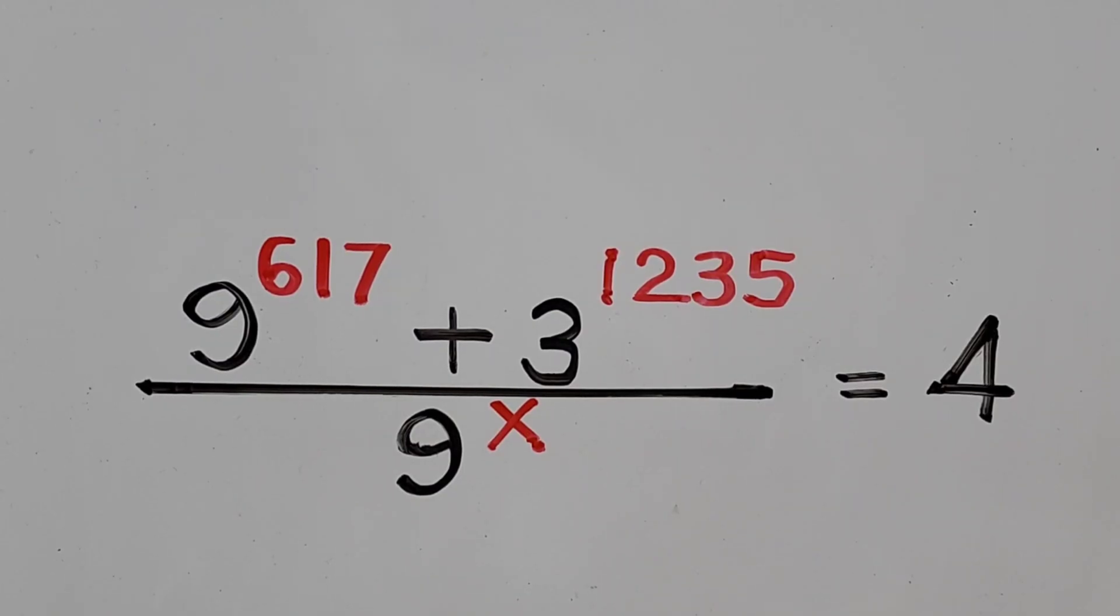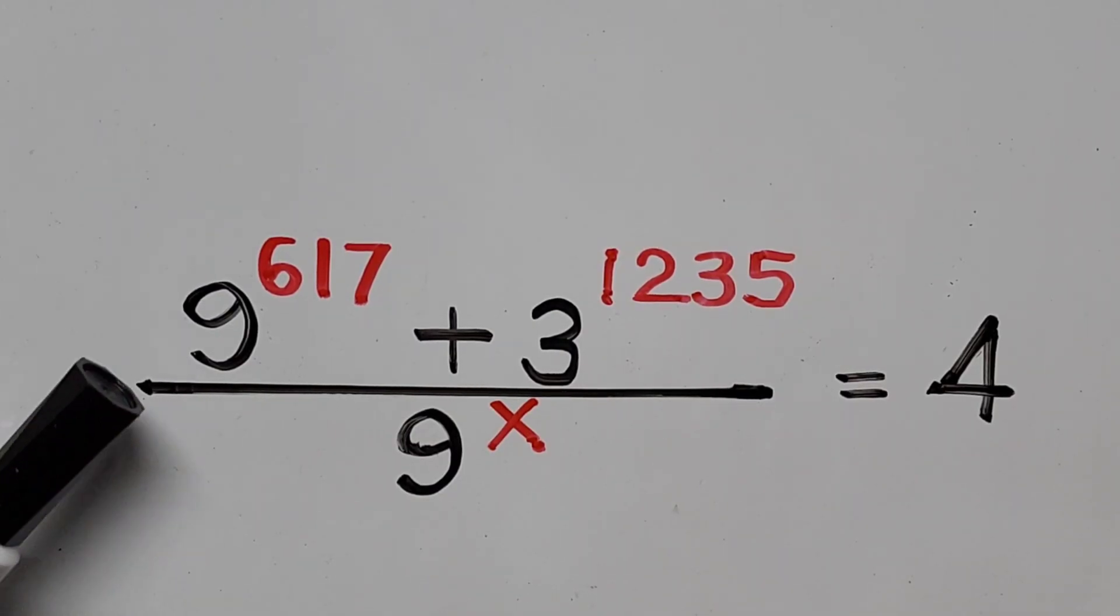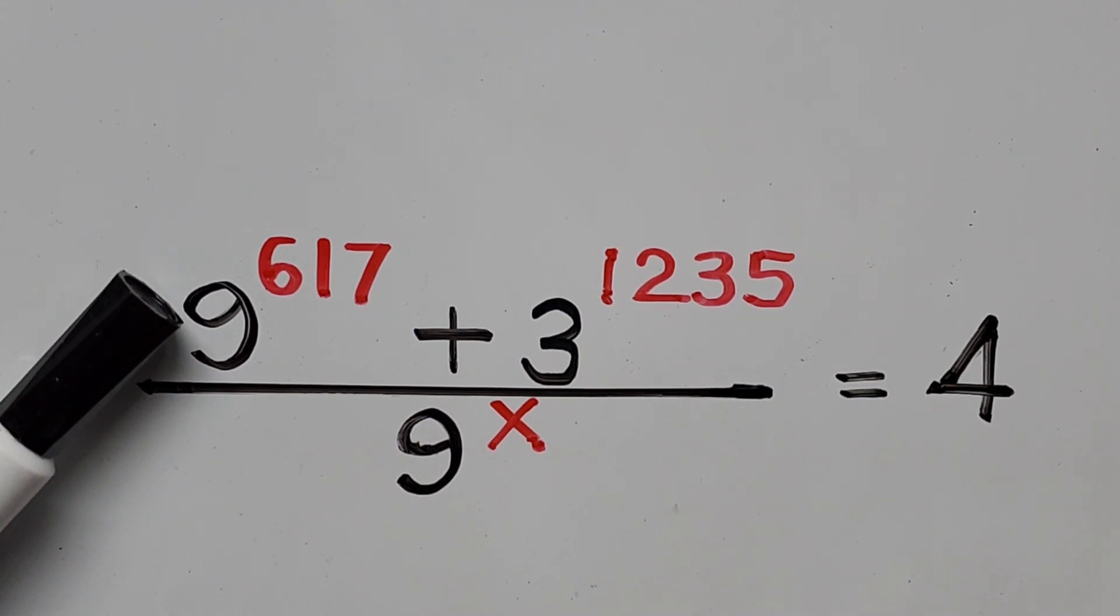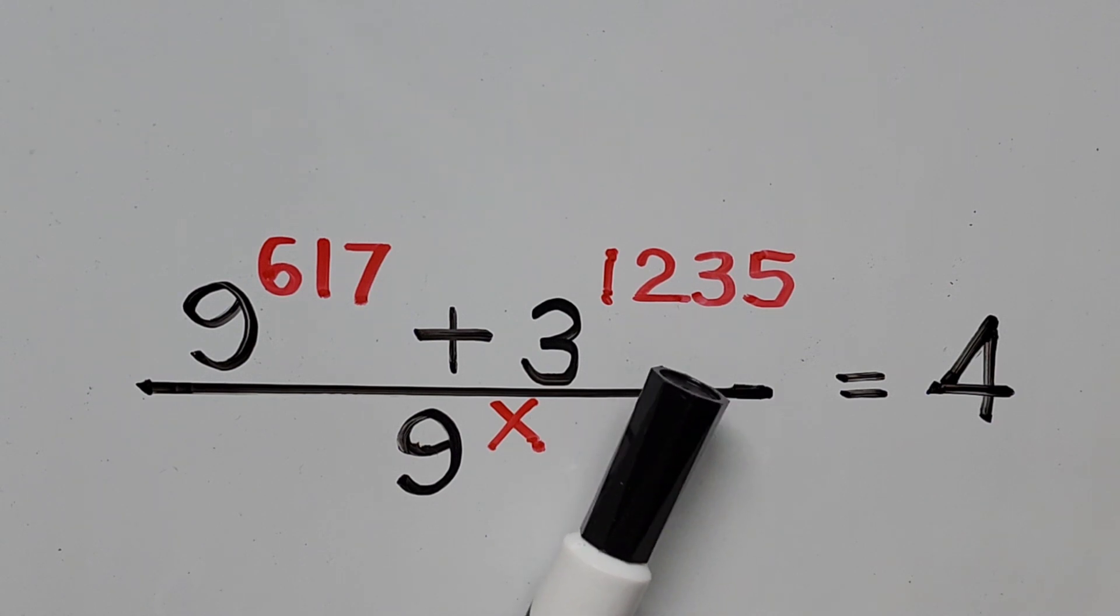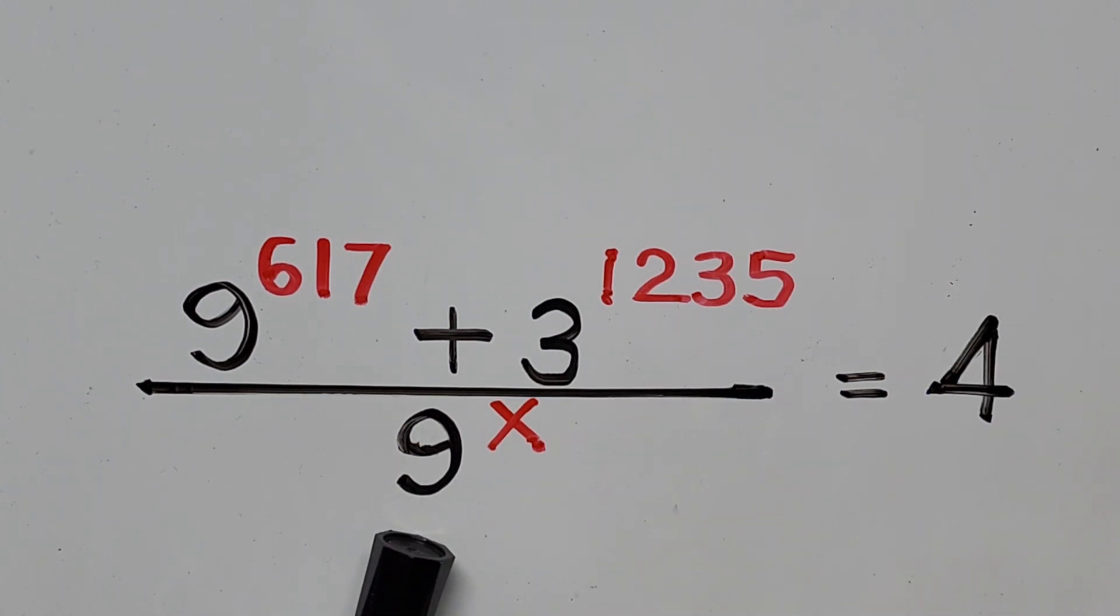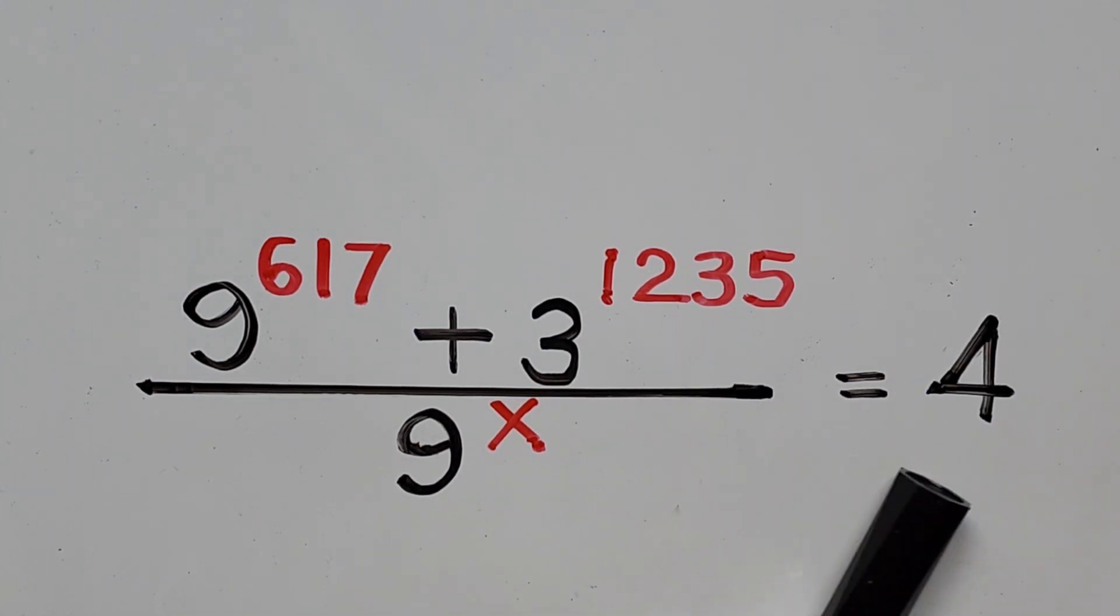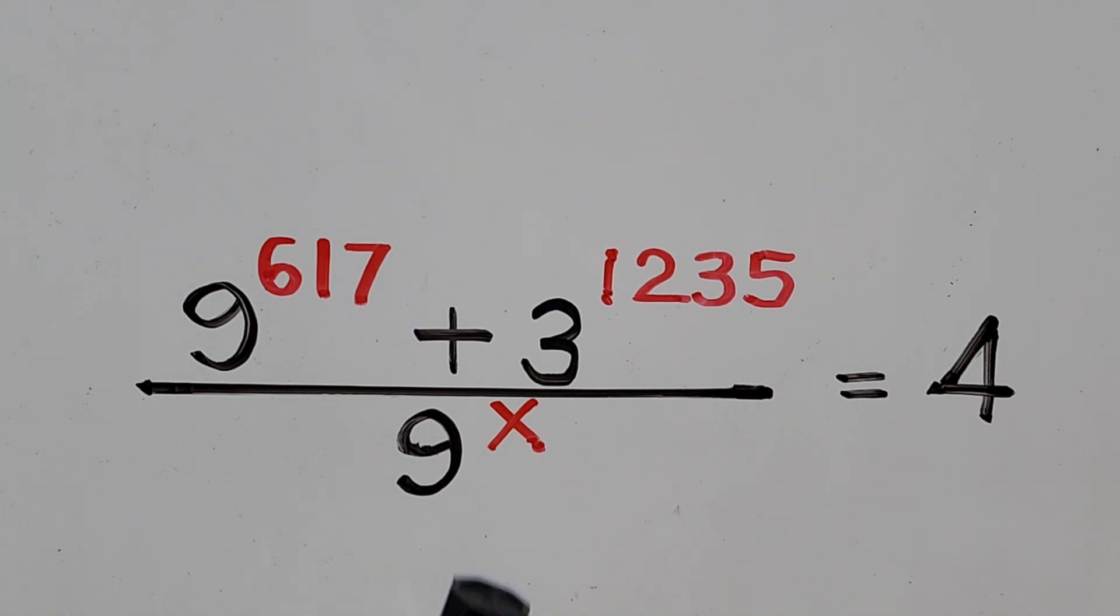Hello everyone, we have here a given exponential equation. 9 to the power of 617 plus 3 to the power of 1235 divided by 9 to the power of x equals 4. And in this video we'll be solving for the value of x.